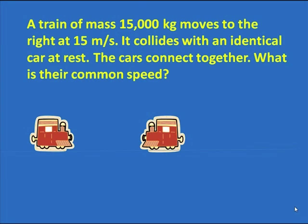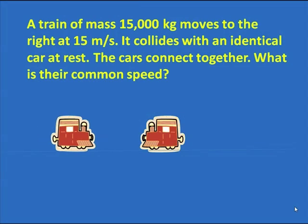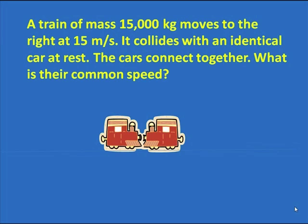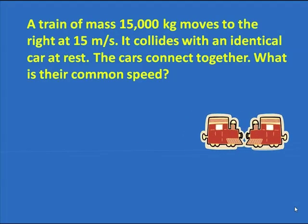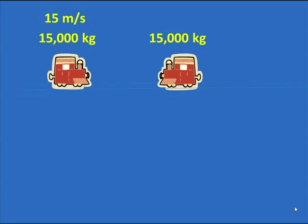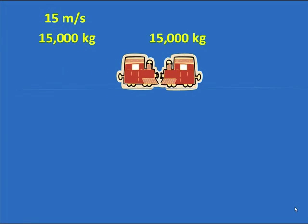A train of mass 15,000 kilograms moves to the right at 15 meters per second collides with an identical car at rest. They connect together. And the question is, what is their common speed? This is a very typical first kind of conservation of momentum question. The first car is moving. The other is not.